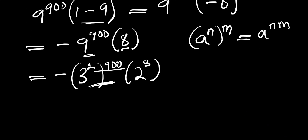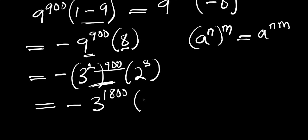This gives us negative 3 to the power of 1800 times 2 to the power of 3. That is the simplest form we can reach for this particular problem.